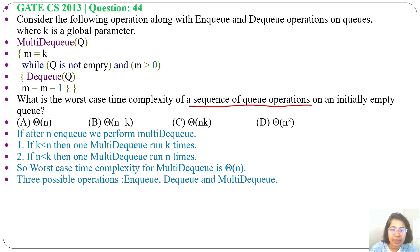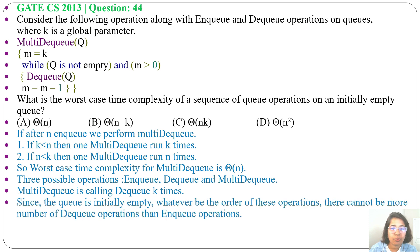Initially Q is empty, after that we will enqueue first. If Q is empty, we cannot dequeue. So first we will enqueue, then we can do dequeue or multi-dequeue. In single dequeue, we will delete one element. In multi-dequeue, we can delete K elements. Since Q is initially empty, so whatever the order, like enqueue, dequeue, multi-dequeue, then dequeue, then enqueue, whatever is the order,